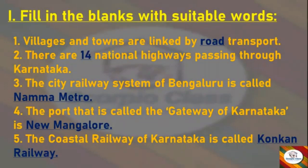Fill in the Blanks. First: Villages and towns are linked by __ transport. Answer: Road. Next: There are __ national highways passing through Karnataka. Answer: 14. Next: The city railway system of Bengaluru is called __. Answer: Namma Metro.